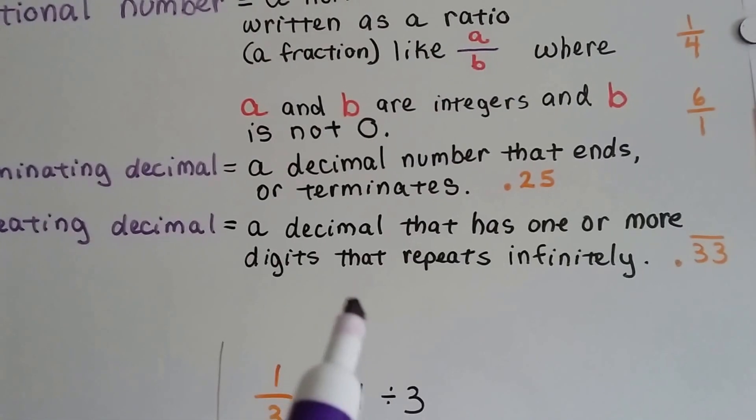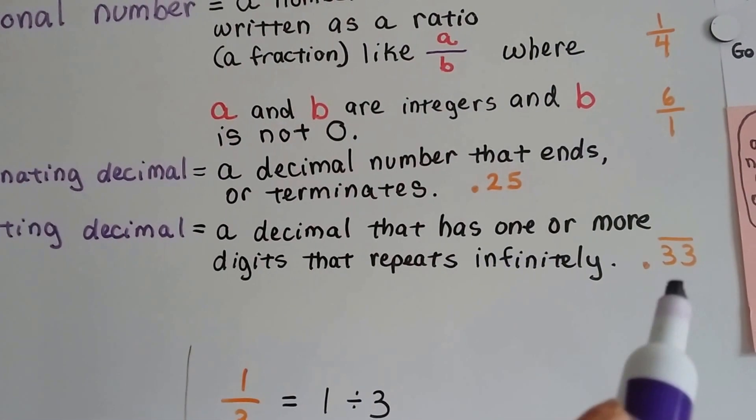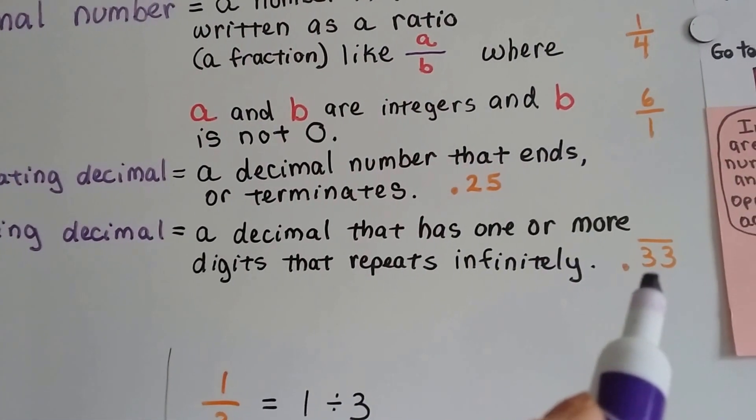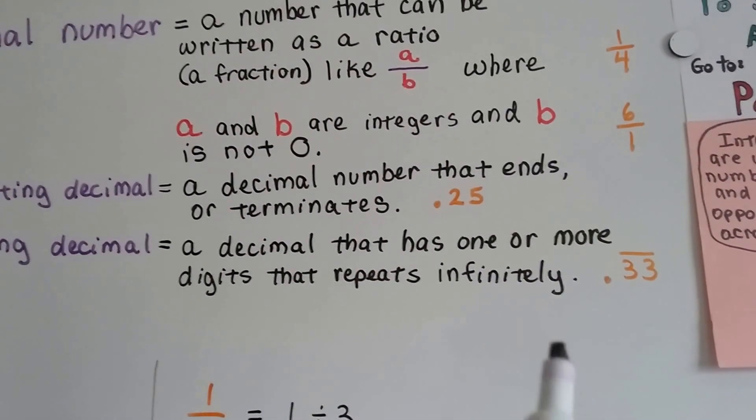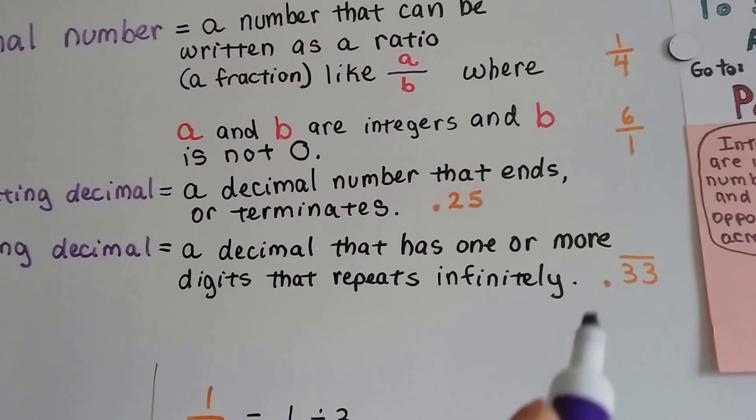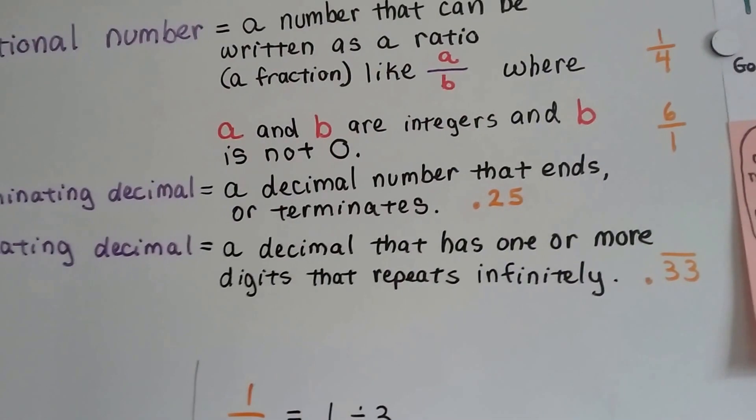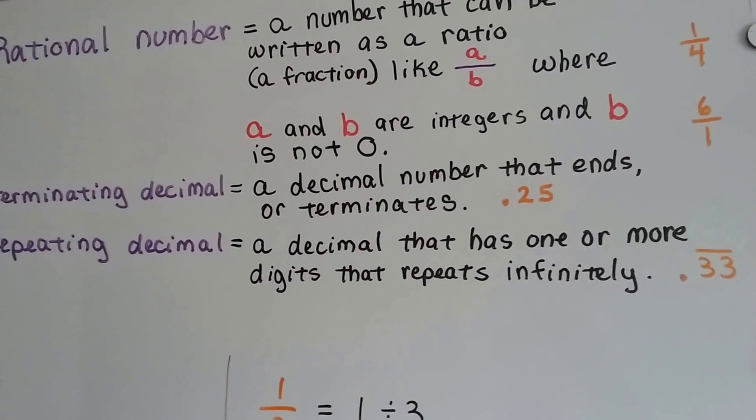A repeating decimal is a decimal that has one or more digits that repeats infinitely. 1/3 is 0.33333, and that 3 just keeps going into infinity. So we stop after a couple digits and put a bar over the top to let us know that it's going to repeat.